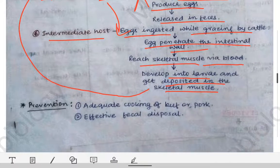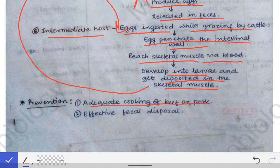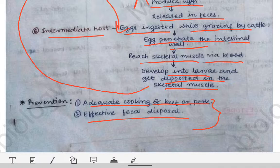Now, how will we prevent this? The prevention is simple. Adequate cooking of beef and any food material should be done at adequate temperature for an adequate amount of time. Additionally, effective faecal disposal should be practiced. These two are the most important preventive measures for prevention of Taenia solium and Taenia saginata disease in the community.